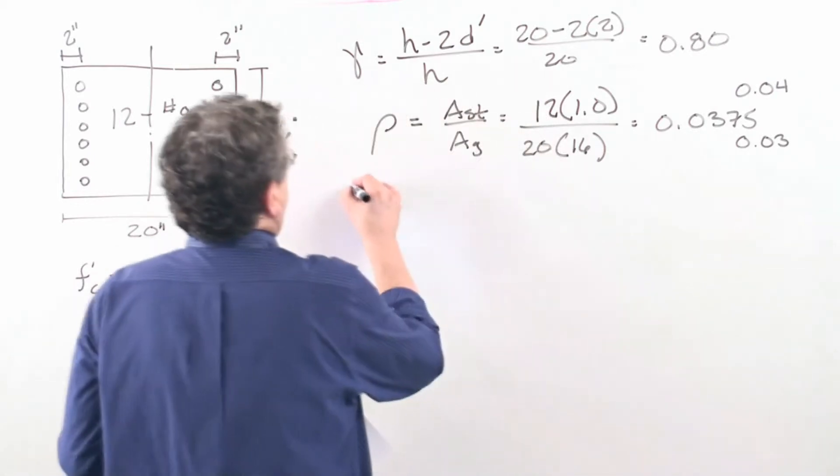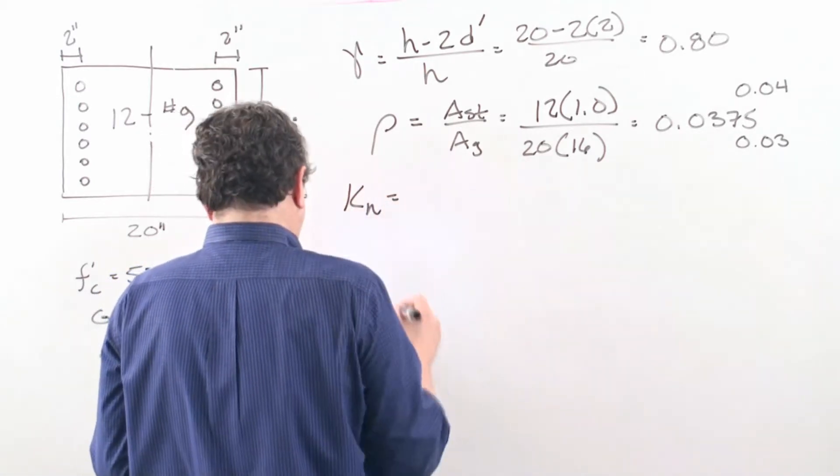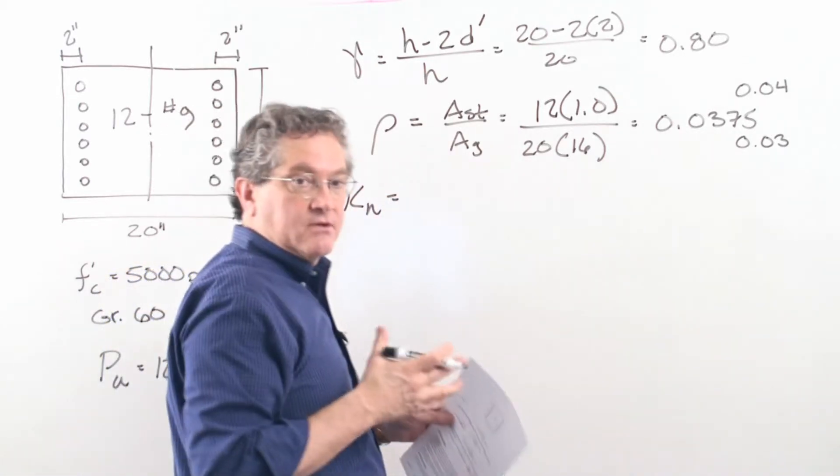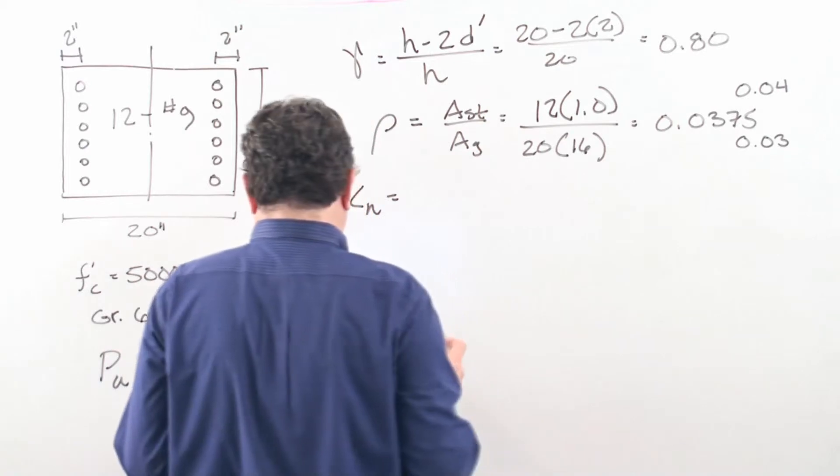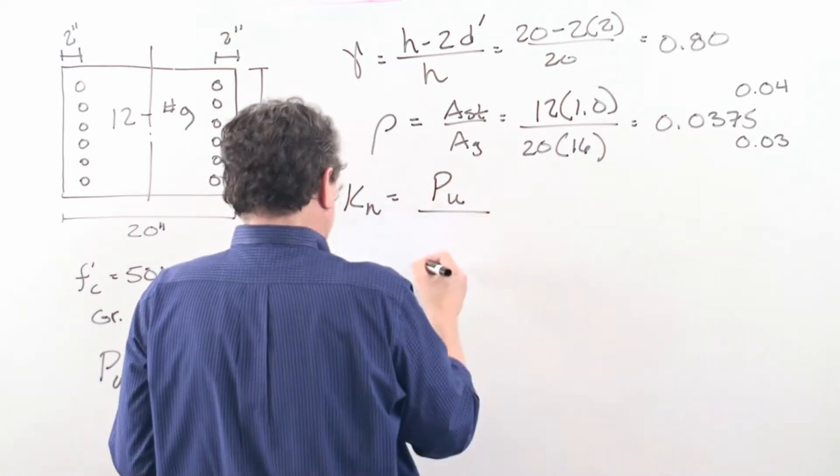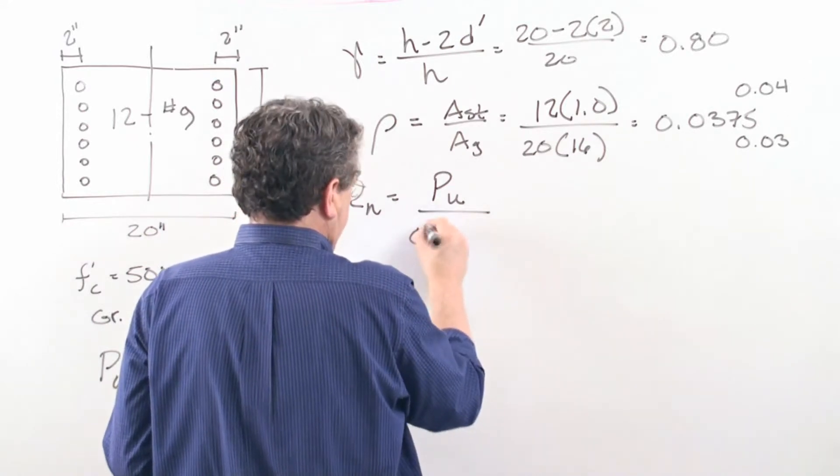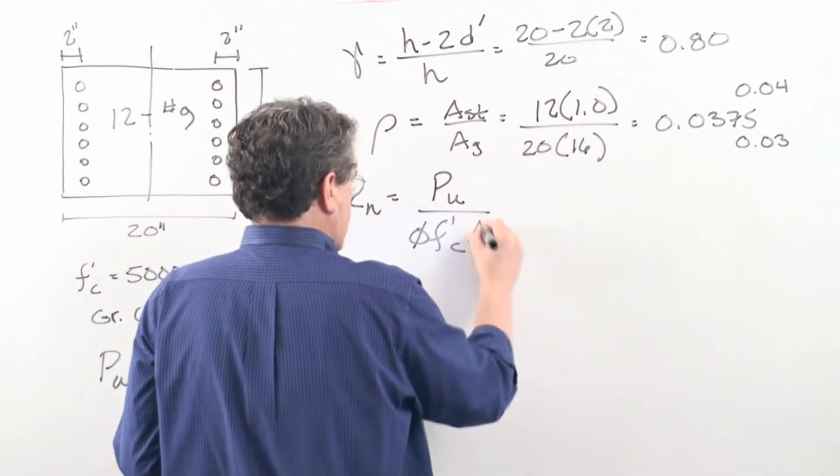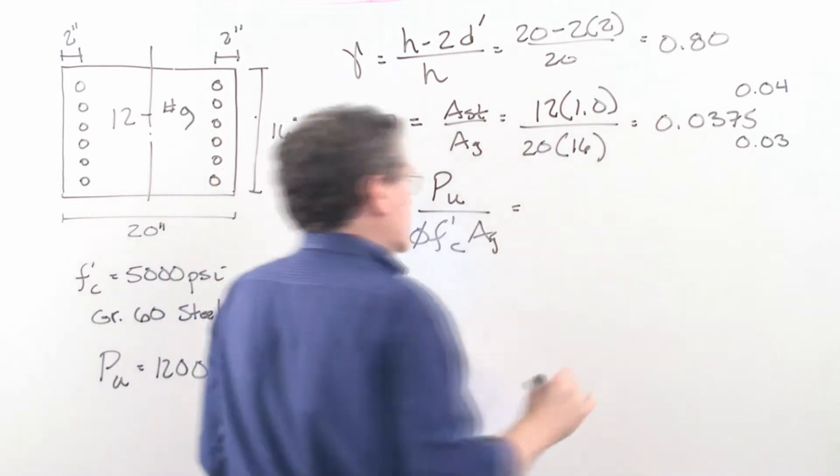Next what we want to do is calculate our KN value because we're given an axial load that we have to design to. That was our axial load divided by the phi, our strength of the concrete, and our gross area of the concrete.